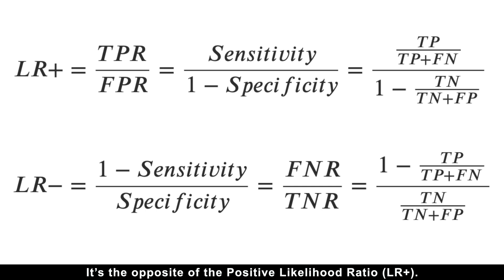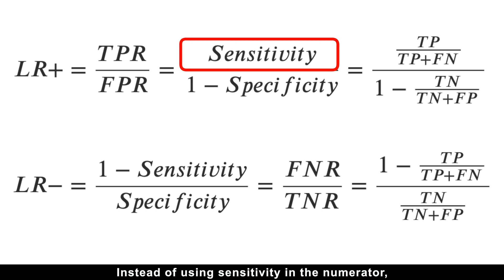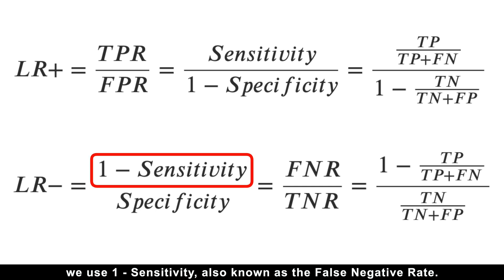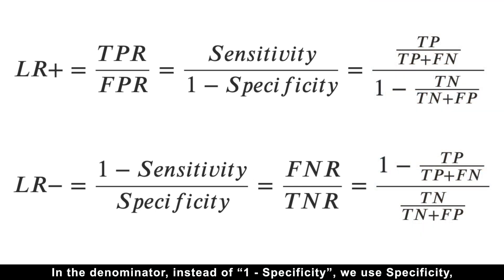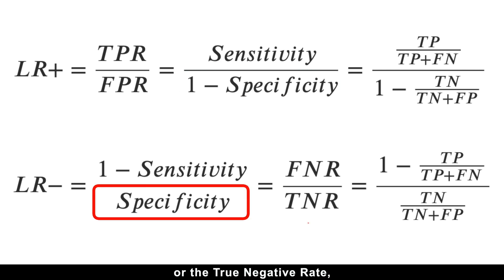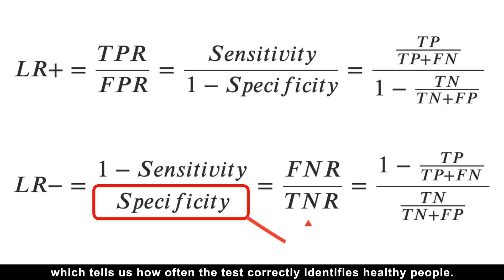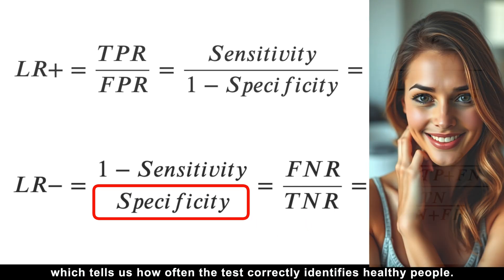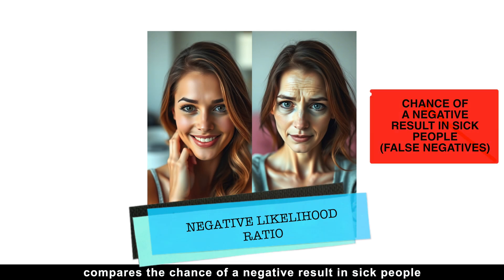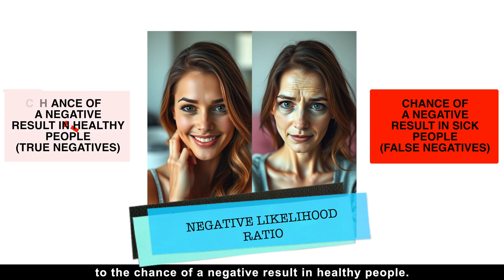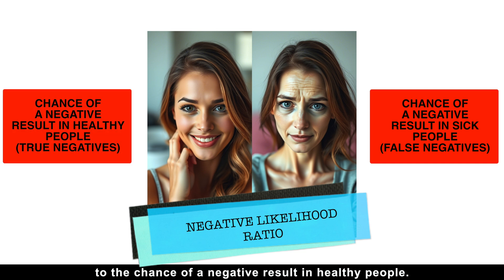The math behind the negative likelihood ratio is straightforward — it's the opposite of the positive likelihood ratio. Instead of using sensitivity in the numerator, we use one minus sensitivity, also known as the false negative rate, which tells us how often the test correctly identifies healthy people. The negative likelihood ratio compares the chance of a negative result in sick people to the chance of a negative result in healthy people.